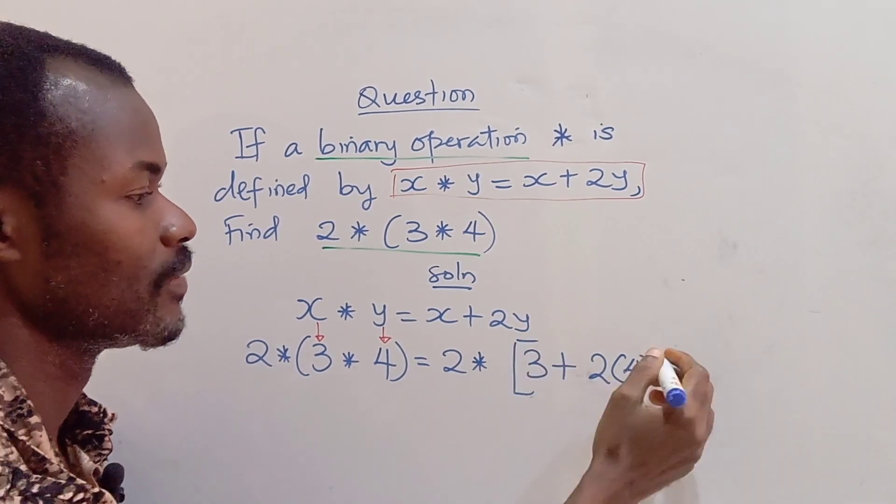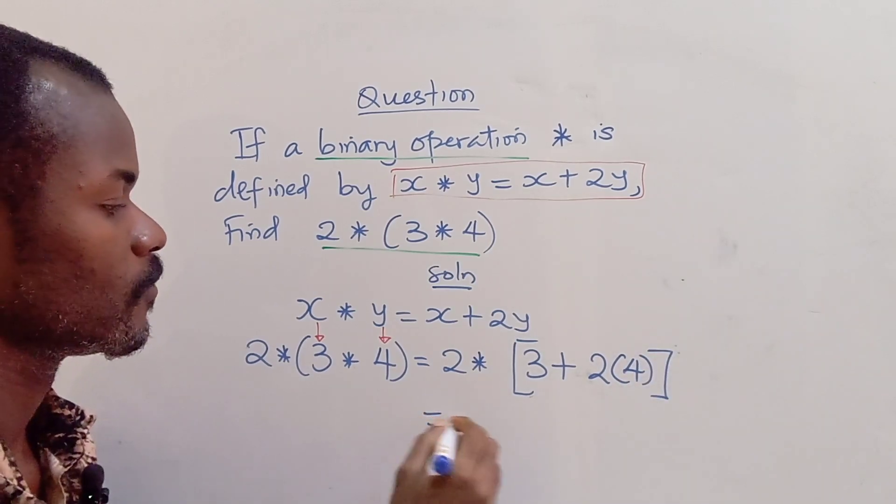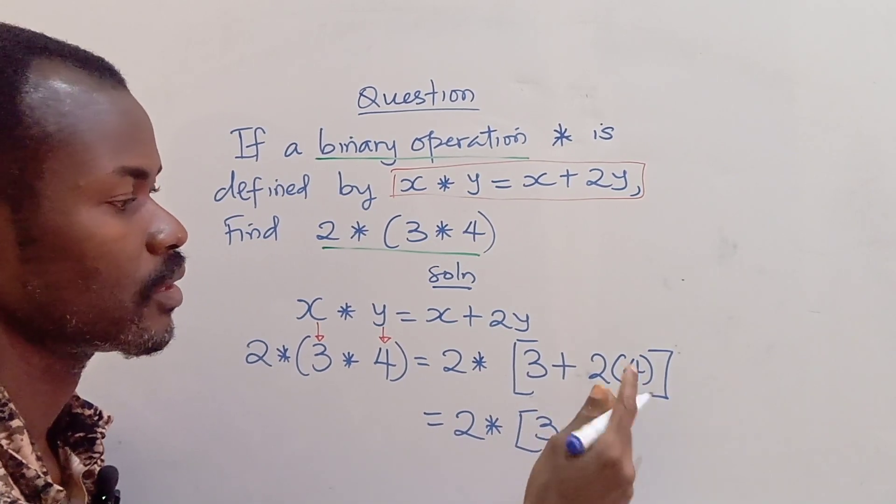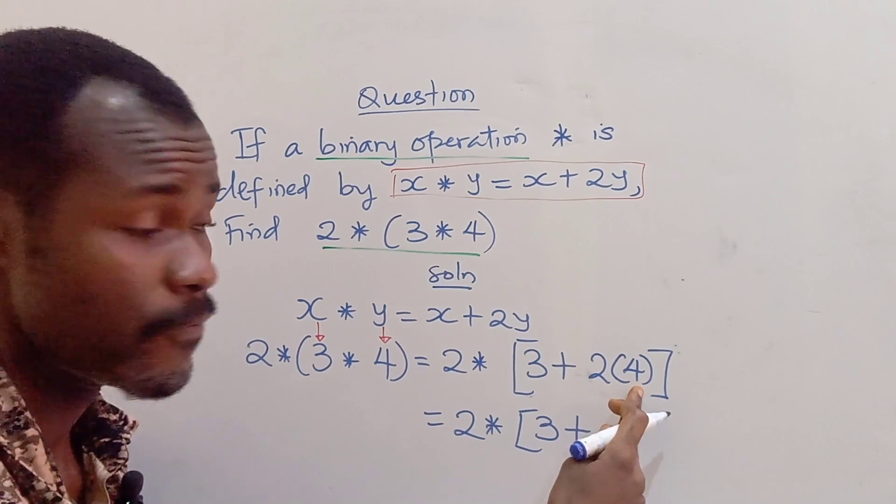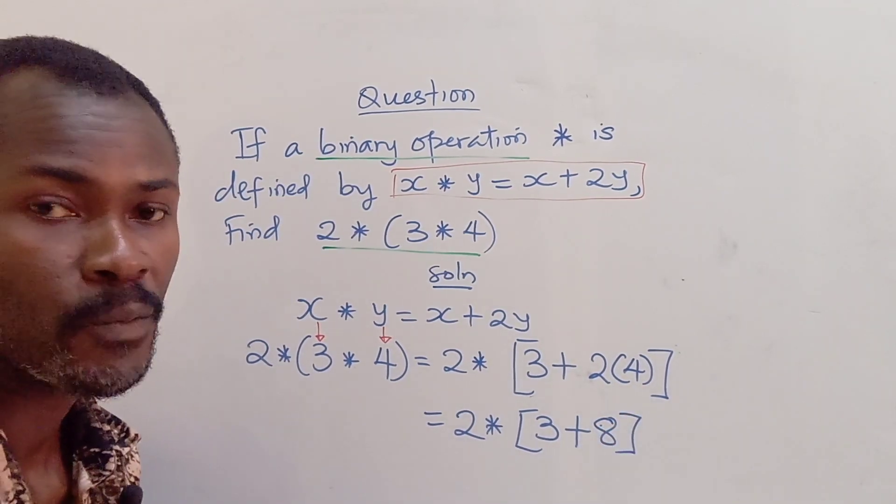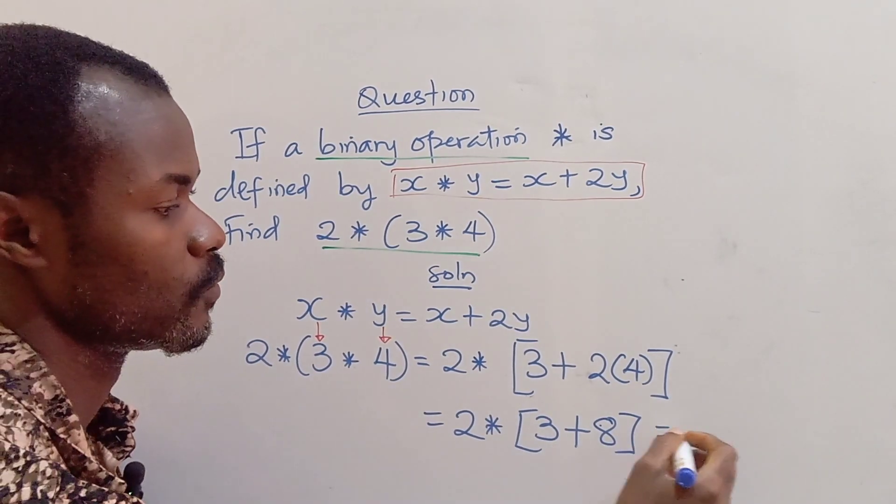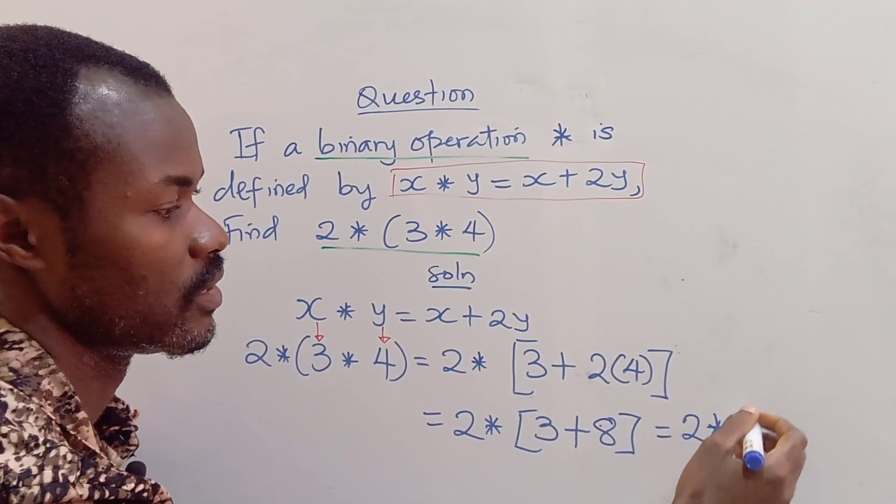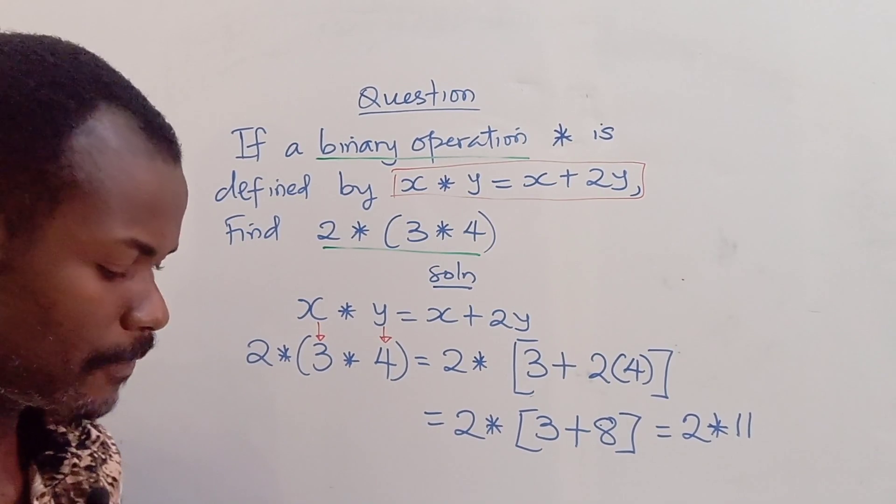So let's see what that gives us. We are going to have 2 asterisk (3 plus 2 times 4). This will give us 2 asterisk (3 plus 8), which is 11.